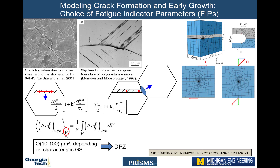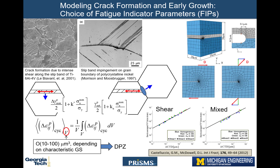Previous work investigated the relationship between the crack tip displacement range and a crystallographic version of the Fatemi-Socie FIP in homogeneous single crystals and cracks lying at the interface of a slip band in a single crystal. The two were shown to correlate closely to one another, which advocates the use of this FIP as a surrogate measure for the fatigue crack formation driving force.